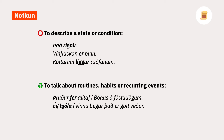The simple present is also used to describe a state or condition. For example: Vínflaska er búin — 'A bottle of wine is finished.' Kötturinn liggur í sófanum — 'The cat lies on the sofa.' Here we can't use the present continuous; these aren't grammatical sentences in Icelandic. We have to use the simple present.